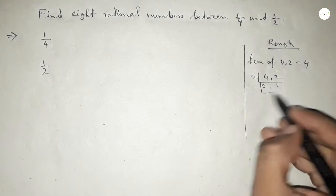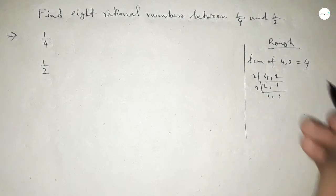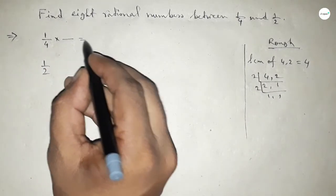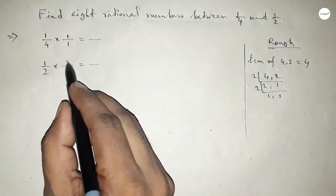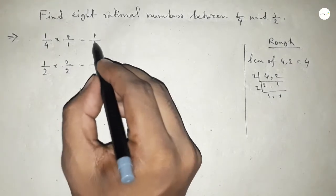Now what should be multiplying here and here to get the denominator 4? If we put here 1 and here 2, this is 1 over 4 and this is 2 over 4.